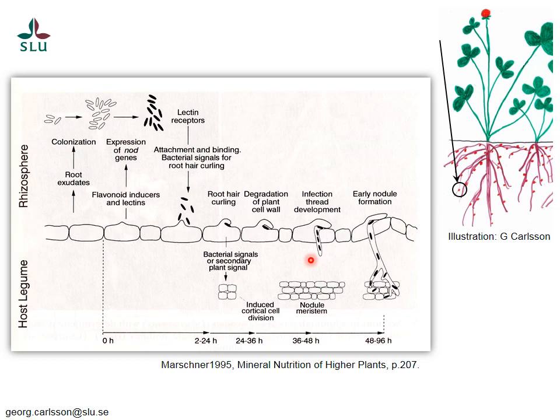When they enter the root cells, there is a formation of a channel, or infection thread, which is a channel going down towards the inside of the root. This channel is formed by plant cell membranes — a channel where the bacteria can be inside but separated from the plant cell cytoplasm by this cell membrane. So bacteria can move through this channel and get into the inside of the plant root.